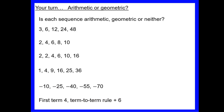Now that we've looked at arithmetic and geometric sequences, decide whether each sequence is arithmetic, geometric, or neither. Quick reminder: arithmetic goes up or down by the same amount via adding or subtracting; geometric goes up or down by multiplying or dividing by the same number. If it does neither, it is neither. Pause the video and have a go.